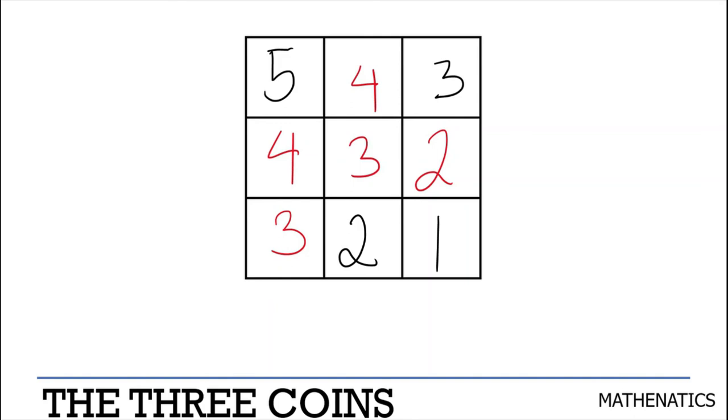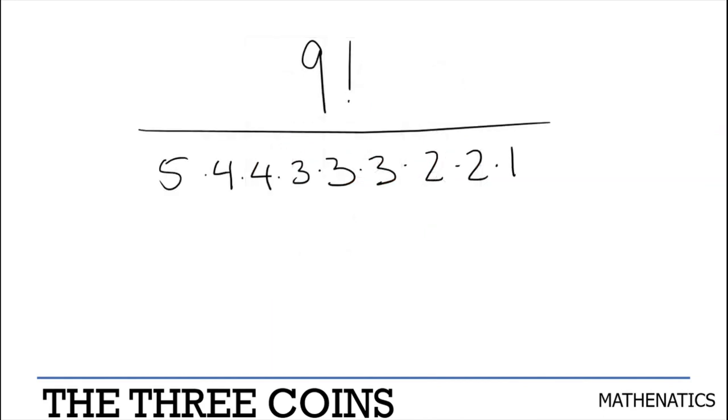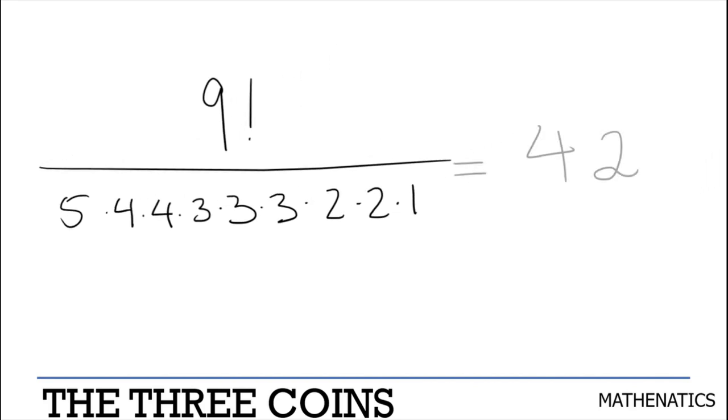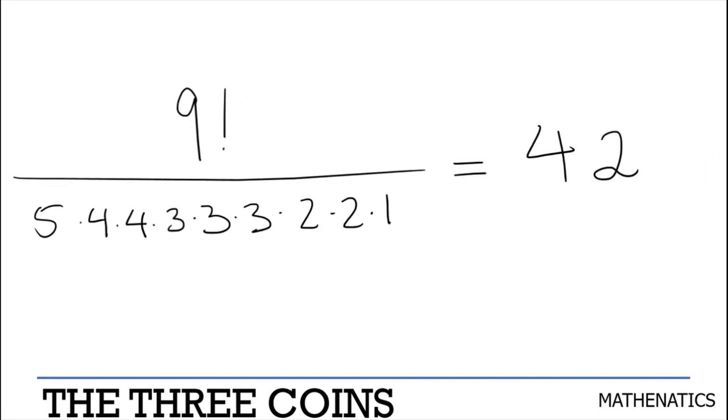Now, observe that there are 9 squares, so we take 9 factorial and divide it by these. Now if we do that, we end up with an expression similar to this. Now we can fully simplify and solve this to get 9 factorial over 5 times 4 times 4 times 3 times 3 times 3 times 2 times 2 times 1 is 42.